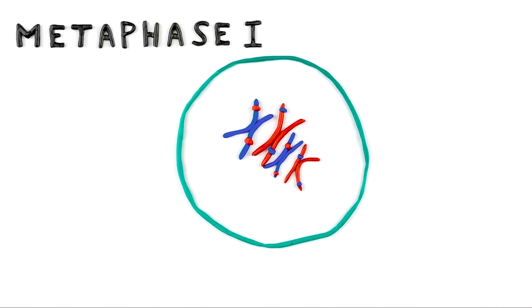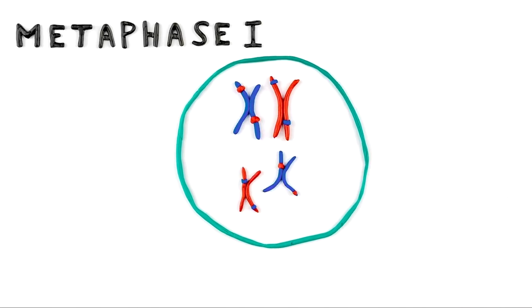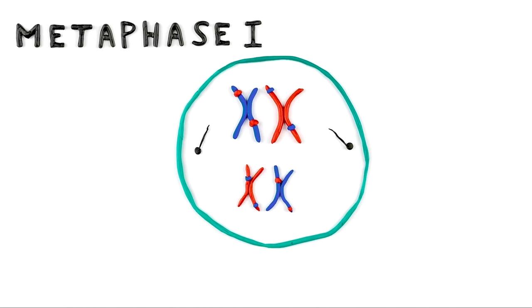In metaphase I, the pairs of chromosomes line up in the middle of the cell. Fibres attach the chromosomes to two bodies on opposite sides of the cell.